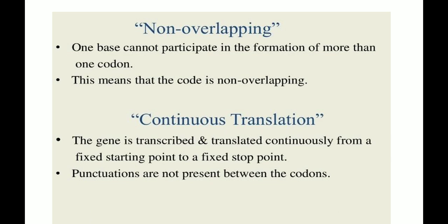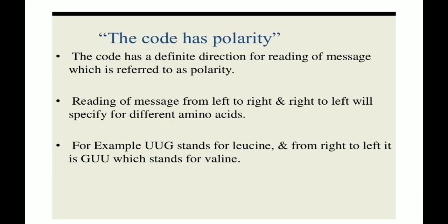The genetic code is also continuous in translation — the gene is transcribed and translated continuously from a fixed starting point to a fixed stop point. Punctuations are not present between codons. The codon has polarity: the code has a definite direction for reading of the message, reading from left to right versus right to left will specify different amino acids. For example, UUG stands for leucine and from right to left, GUU stands for valine.